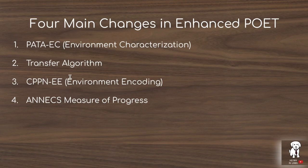The third major change is how these environments are encoded. This is called a Compositional Pattern Producing Network, or CPPN. It's similar to the NEAT algorithm — Neuro Evolution of Augmenting Topologies — which evolves more complex patterns by developing new nodes and new connections from an initial node toward the output. We'll get into the details of exactly how that works later in the presentation.